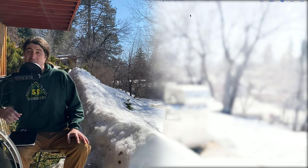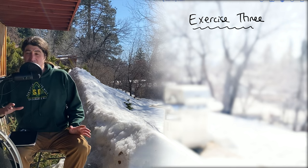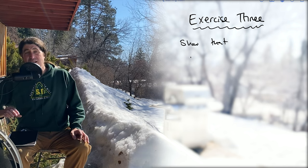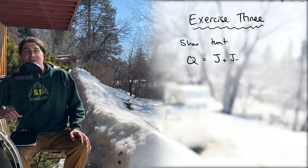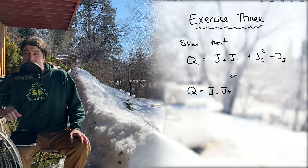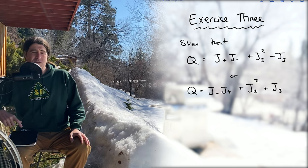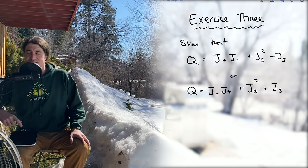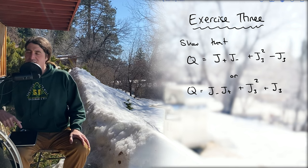Finally, our third exercise in the Lie algebra is to verify that Q can be represented explicitly in terms of j plus or minus as j_plus j_minus plus j_3 squared minus or plus j_3. That relation in particular will help us extensively to discuss the unitary representations.